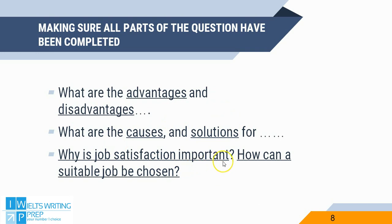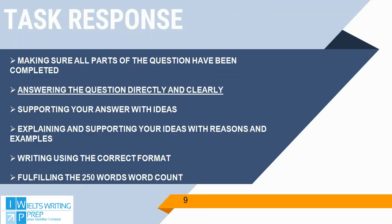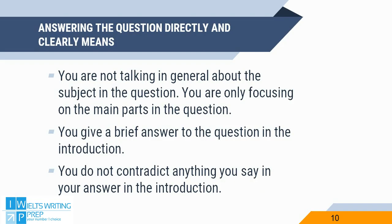'Why is job satisfaction important? And how can a suitable job be chosen?' — here we have two parts to the question. Then we have answering the question directly and clearly, meaning you are not just talking in general about the topic, but answering the question specifically. To make your answer clear, you should state your answer in the introduction and make sure you do not contradict it anywhere within the body of the text.